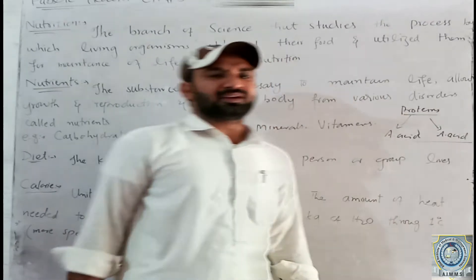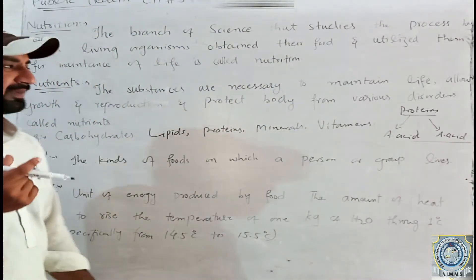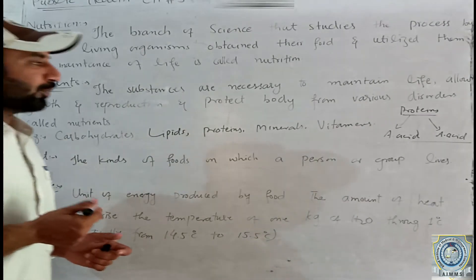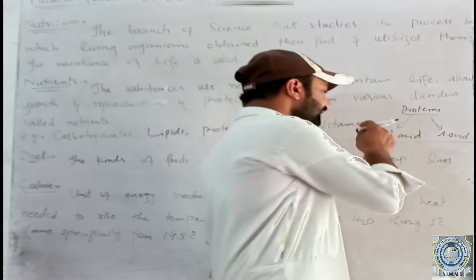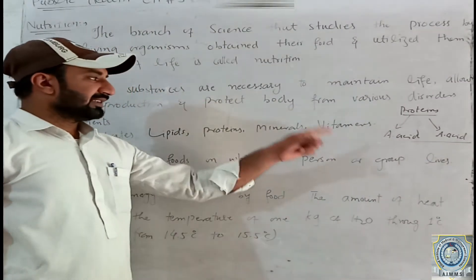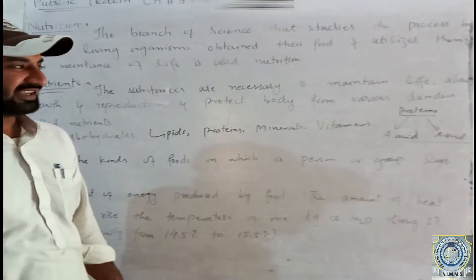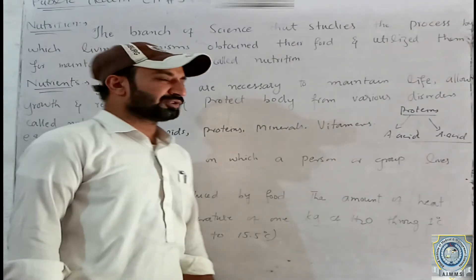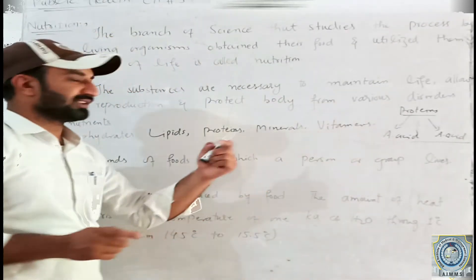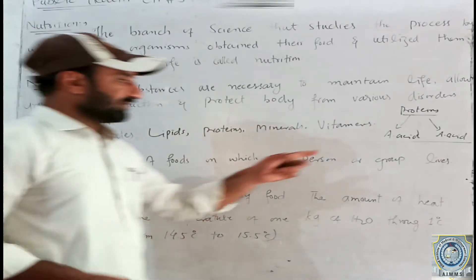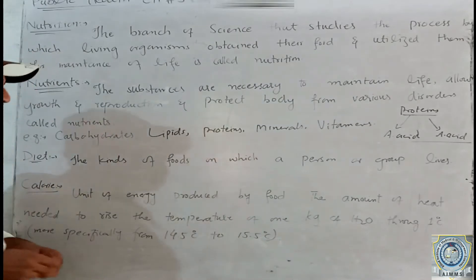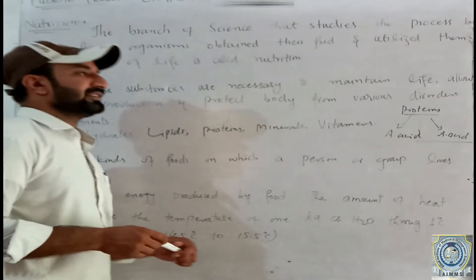Protein is a macronutrient. Protein is made up of amino acids. Amino acids are micronutrients, while protein itself is the macronutrient. Protein is important for blood and the body.